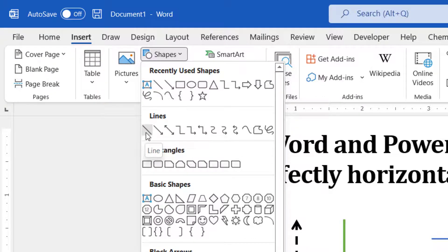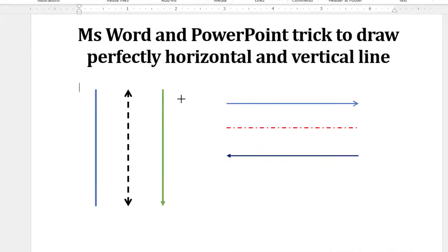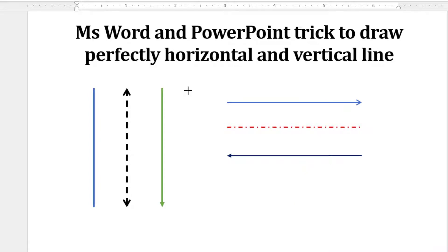Here I'm going to choose this line without arrow. After choosing this, my mouse pointer will turn to a plus sign. Let's say I want to draw a vertical line. Bring your mouse pointer to the place where you want to start a line.